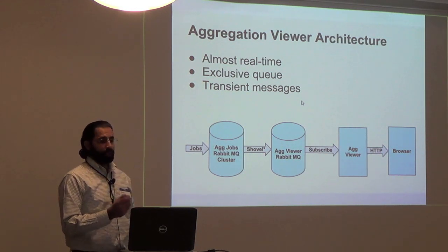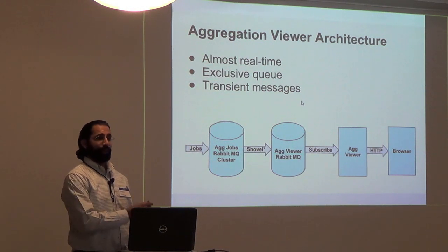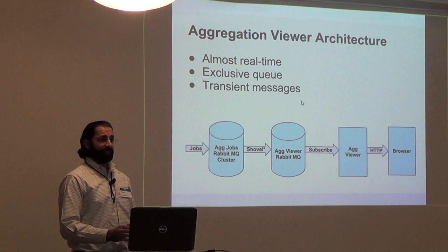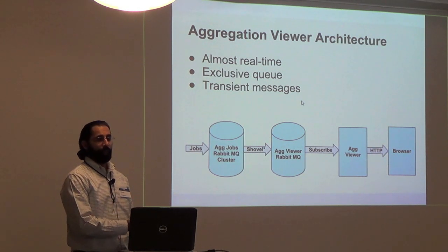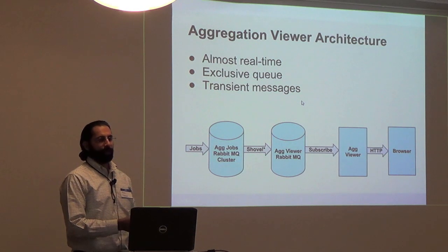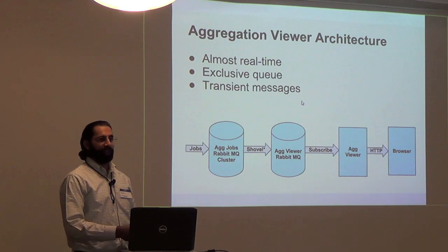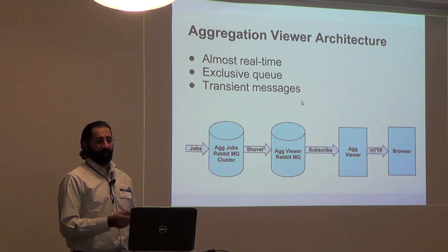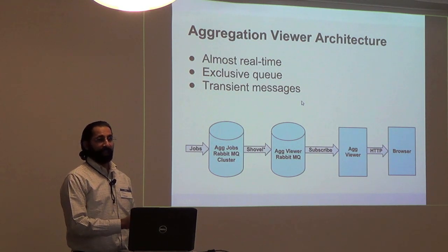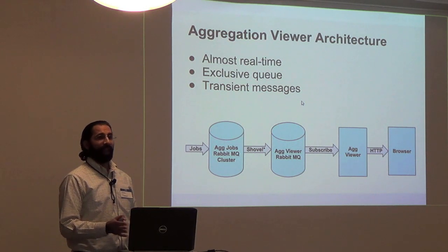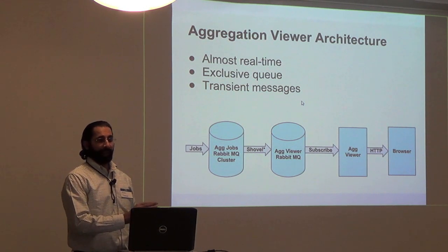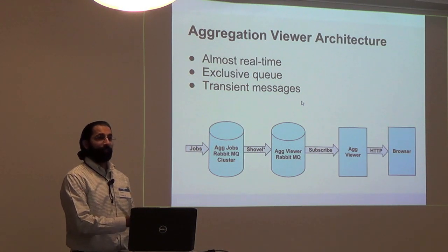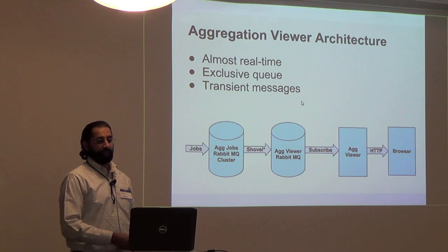One thing the shovel can do is transform messages as it shovels. Production cluster messages are persistent, but when shoveled to the aggregation viewer RabbitMQ instance, they're no longer persistent — so in case of a crash they get lost. This is acceptable because this is a real-time viewer; we only care about what's happening right now. For the same reason, we use RabbitMQ's exclusive queues feature, meaning the queue is bound to a single client. If that client disappears, the queue disappears and any messages destined for it just go to /dev/null.